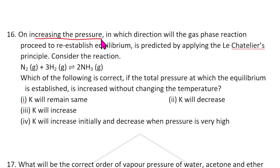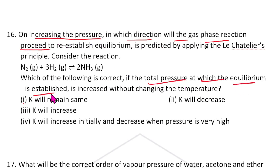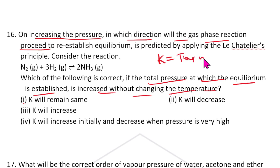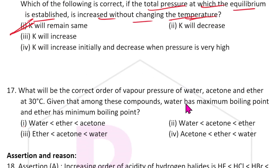Sixteenth question: On increasing pressure, which direction will a gas-phase reaction proceed? If the total pressure is increased without changing temperature, remember that K depends only on temperature, not pressure. Therefore K remains the same when temperature is kept constant. The answer is option 1: K remains the same.